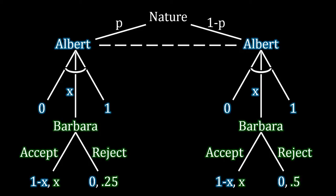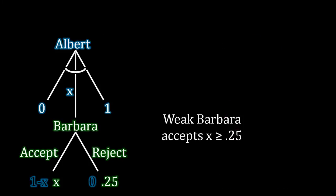How do we go about solving this? We can't just necessarily start all the way at the bottom and work all the way up to the top, because there's a situation where Albert doesn't know which side of the game tree he's in, so we have to do a little bit more legwork to actually get to the solution. What we can do, though, is start at the very bottom with Barbara's decision. Barbara knows which situation she's in. If she's actually the weak type, she knows she's the weak type and can make the proper decision.